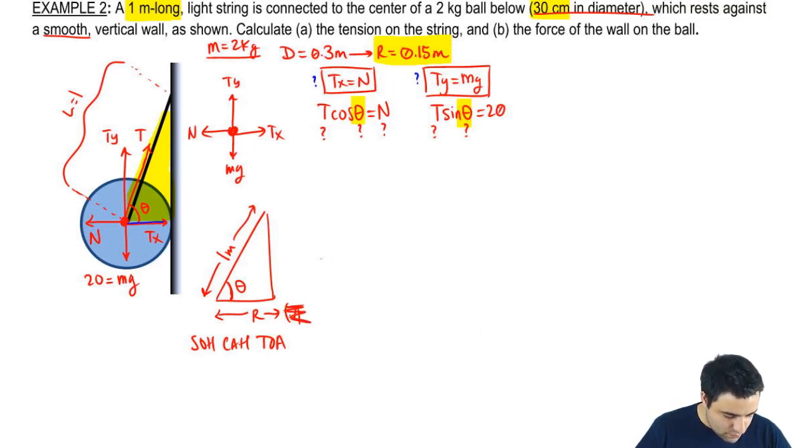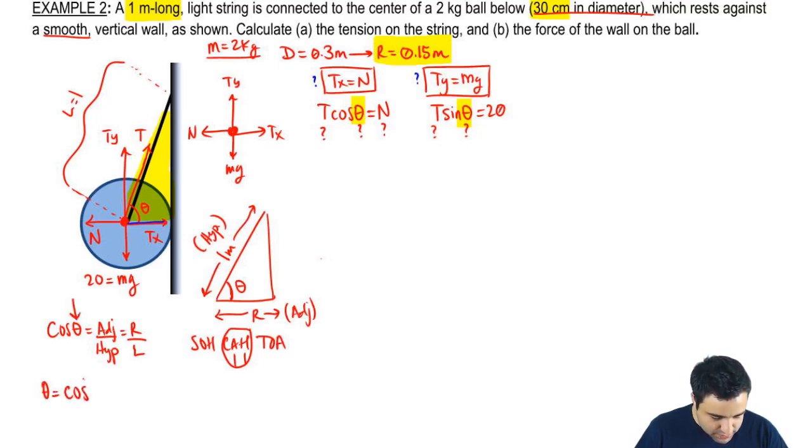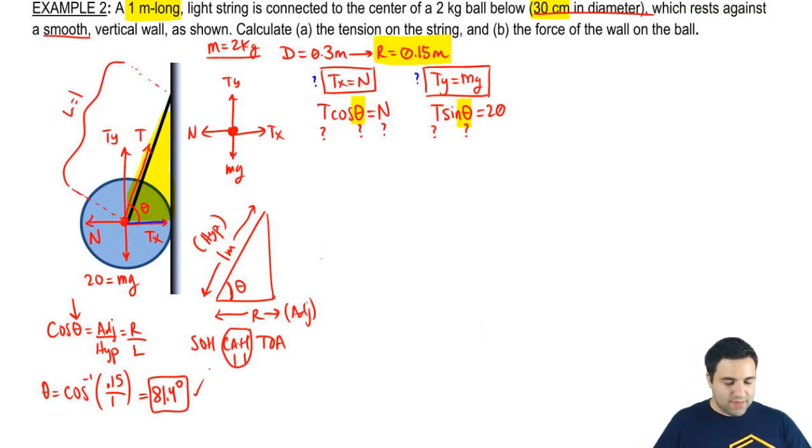This is the hypotenuse. So I have adjacent hypotenuse, I should be using the cosine. So I can say cosine of theta equals adjacent over hypotenuse. Adjacent is R, hypotenuse is L. But what I really want is theta. So theta is the arc cosine of R, which is 0.15, over L, which is 1. So this is just the arc cosine of 0.15. And the arc cosine of 0.15 is 81.4, which makes sense because the hypotenuse is much bigger than R. So this is a very steep angle like this. All right, so now that I know that, I can just plug it in here.